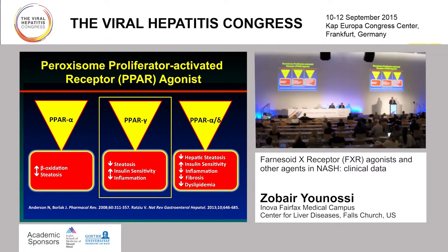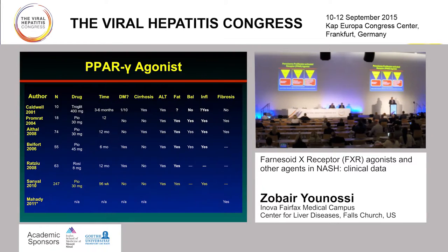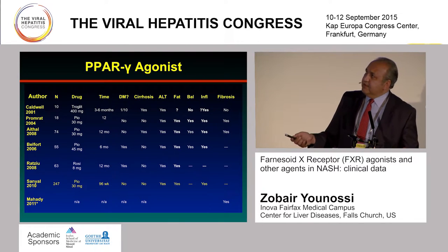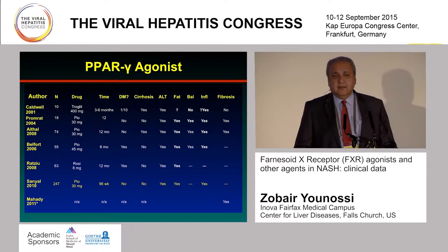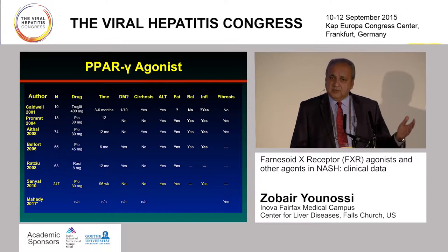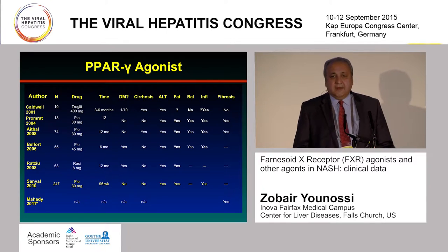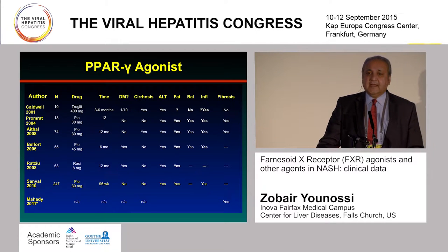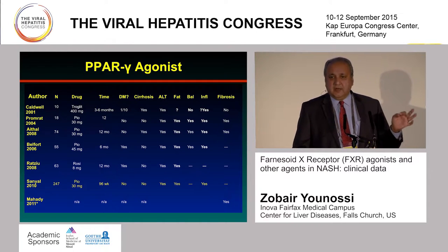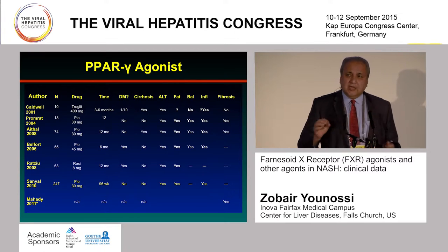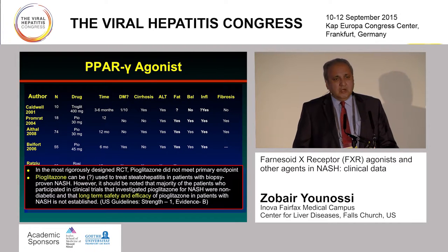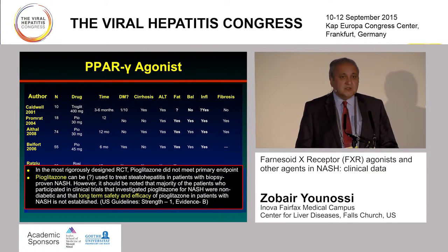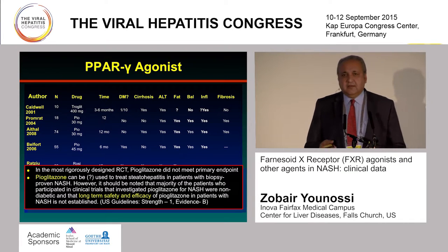Now let's focus on PPAR gamma. A number of different agents have been used, but the most robust study was the PIVENS trial looking at pioglitazone. Unfortunately, pioglitazone was not able to meet the preset primary endpoint of the study. But when you look at individual pathologic features, there was some improvement with pioglitazone. So despite lack of high-level evidence, AASLD still recommends it to be considered for some patients, and I use it occasionally for patients who have diabetes and NASH.